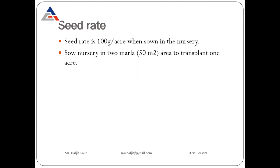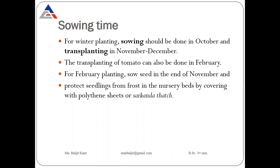For the production of tomatoes, we need to sow the nursery first. Nursery can be sown in 2 marlas (that is 50 square meters area) to transplant in 1 acre. So if we want to transplant the seedlings in 1 acre, we have to sow nurseries in an area of 50 square meters.